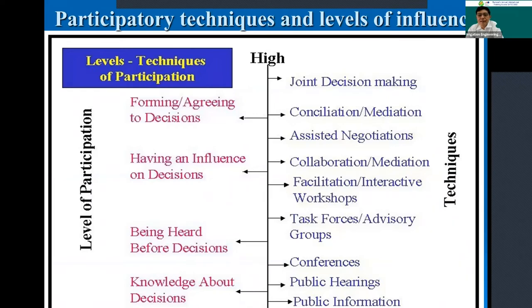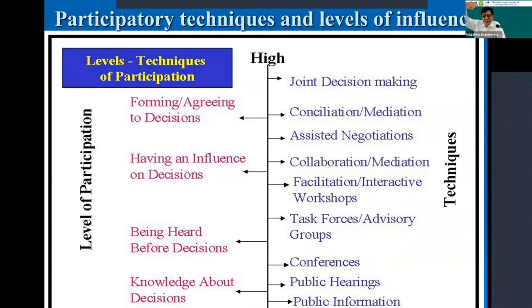Finally, looking at the level of influence: the left-hand axis shows the level of participation and the right shows techniques. At the most basic level, people are informed - they have information. Then they are consulted before decisions. Above that, they can influence decisions at the collaboration or negotiation level. At the highest level, participants have full influence or control over decisions.